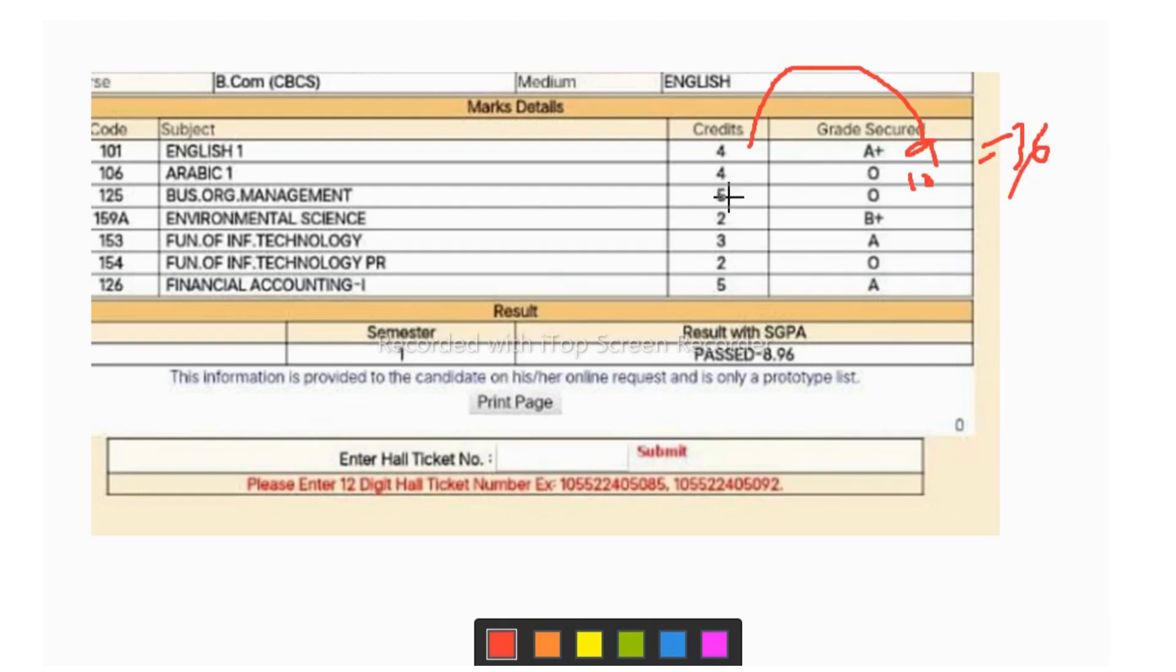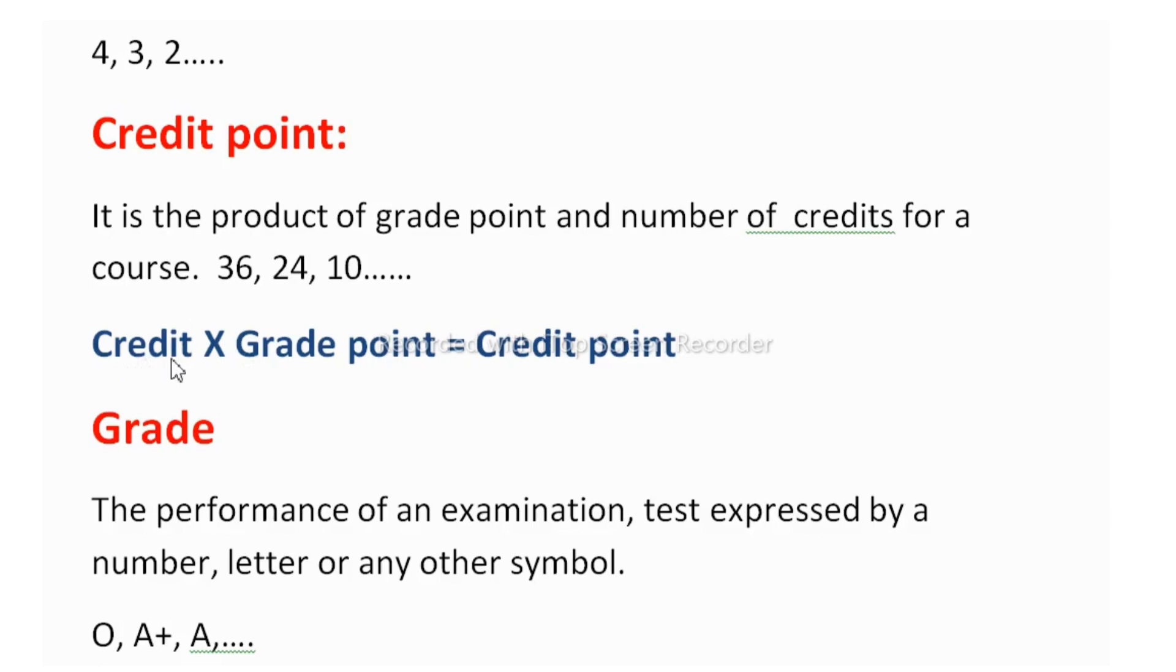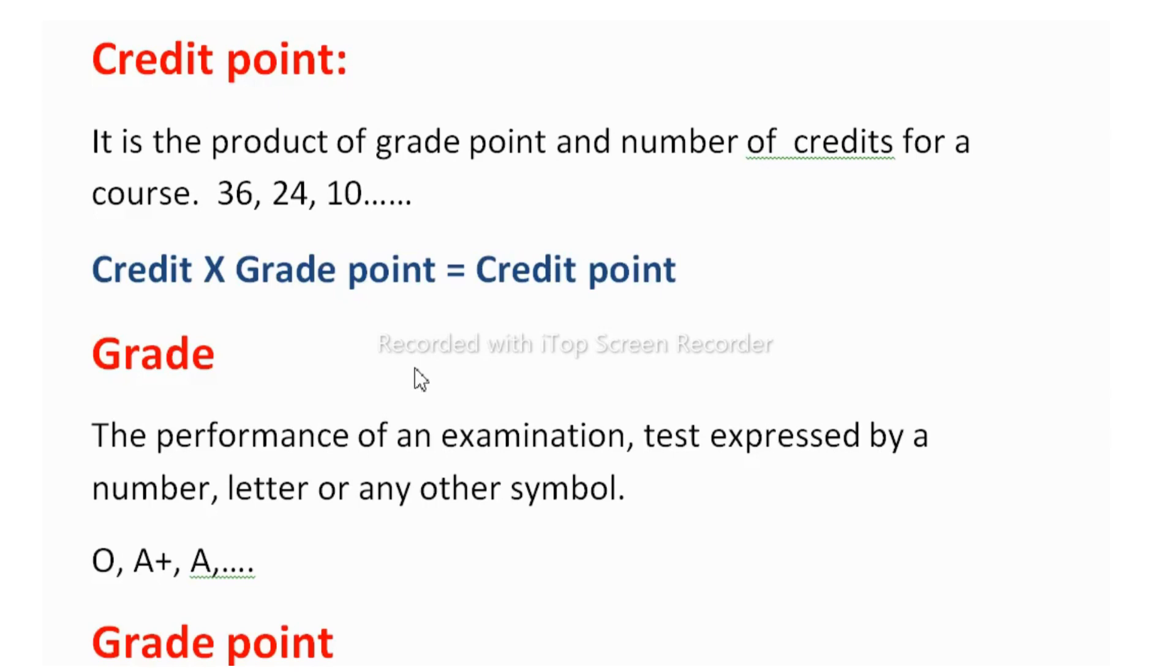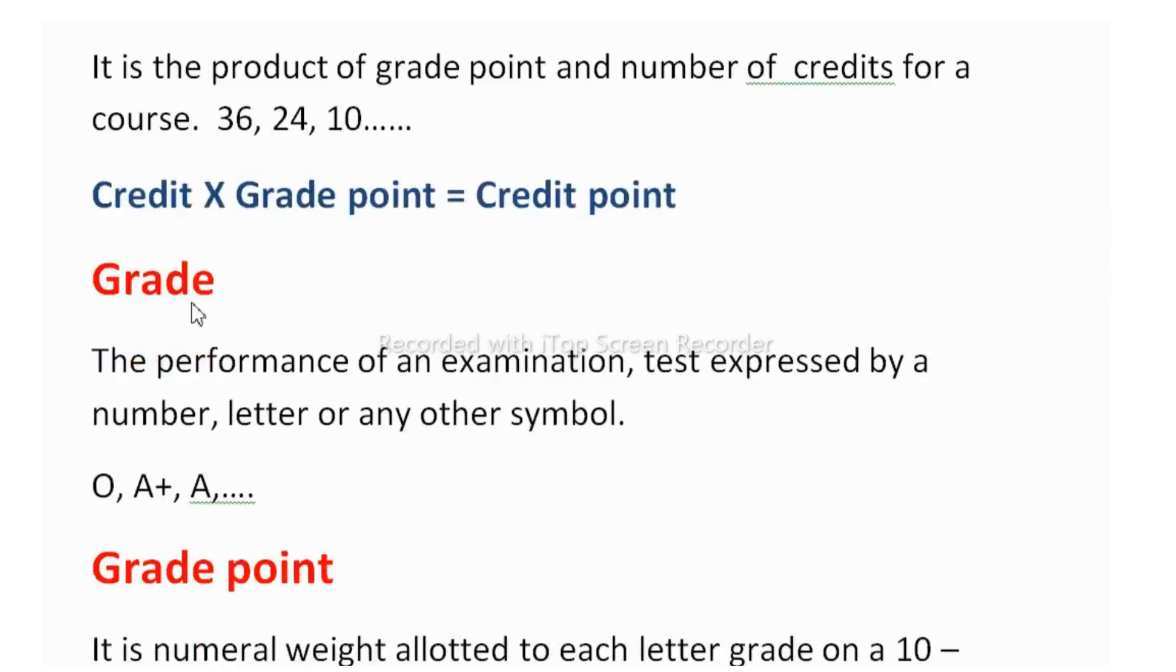In the same way, 10 into 4 equals to 40. So in this way, we have to calculate the credit point. Here I have given the formula: credit into grade point equals to credit point. I will show you how to calculate the CGPA and your percentage. Now let us see what is grade.